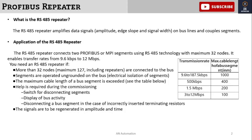You need an RS485 repeater if the network has more than 32 nodes — the maximum is 127 nodes including repeaters connected to the bus. Other use cases: when bus segments are operated on different electrical potentials requiring isolation, when the maximum cable length of the bus segment is exceeded, or when help is required during commissioning, including disconnecting a bus segment or generating amplified signals.